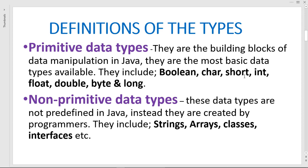Boolean, char, short, int, float, double, byte, and long. For the non-primitive data types, these are not predefined in Java; instead they are created by programmers. Examples include string, arrays, classes, and interfaces. So these are created by the programmer — if you want to create a string, you create it yourself; if you want arrays, you create for yourself; same for classes and interfaces. So these are the only two types of data types we'll be discussing today.